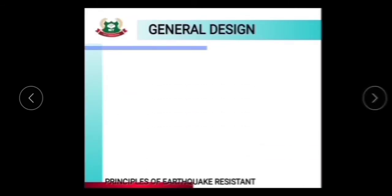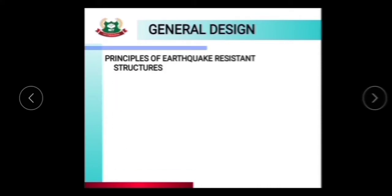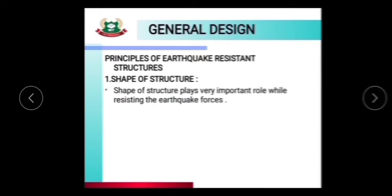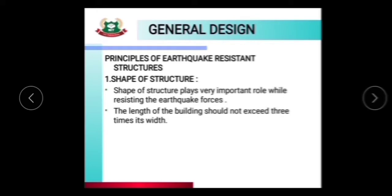General Design Principles of Earthquake Resistant Structures — the first principle is Shape of Structure. Shape plays a very important role while resisting Earthquake Forces. The most important parameter is the shape of the structure — what shape should the building be? The length of the building should not exceed three times its width.